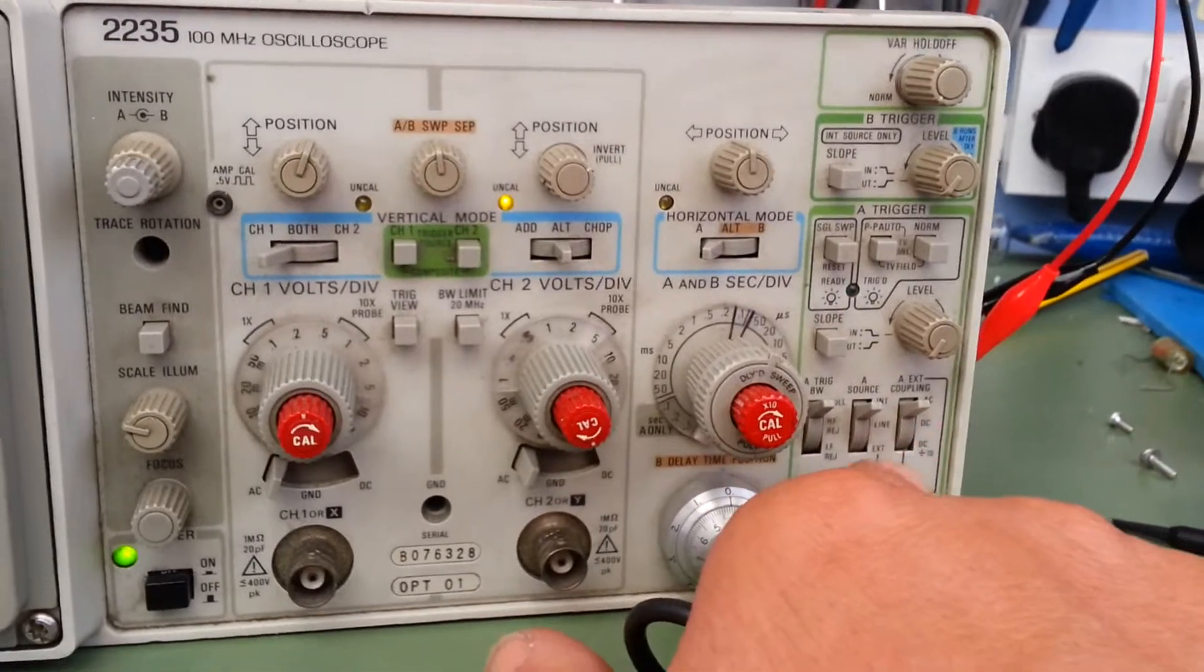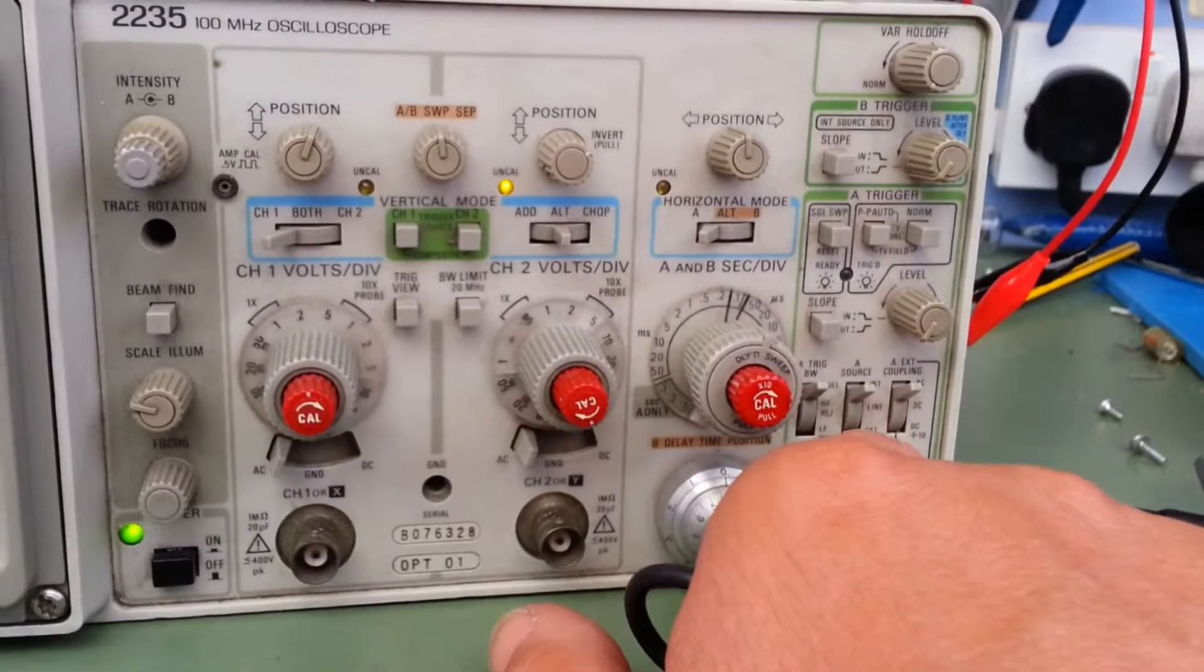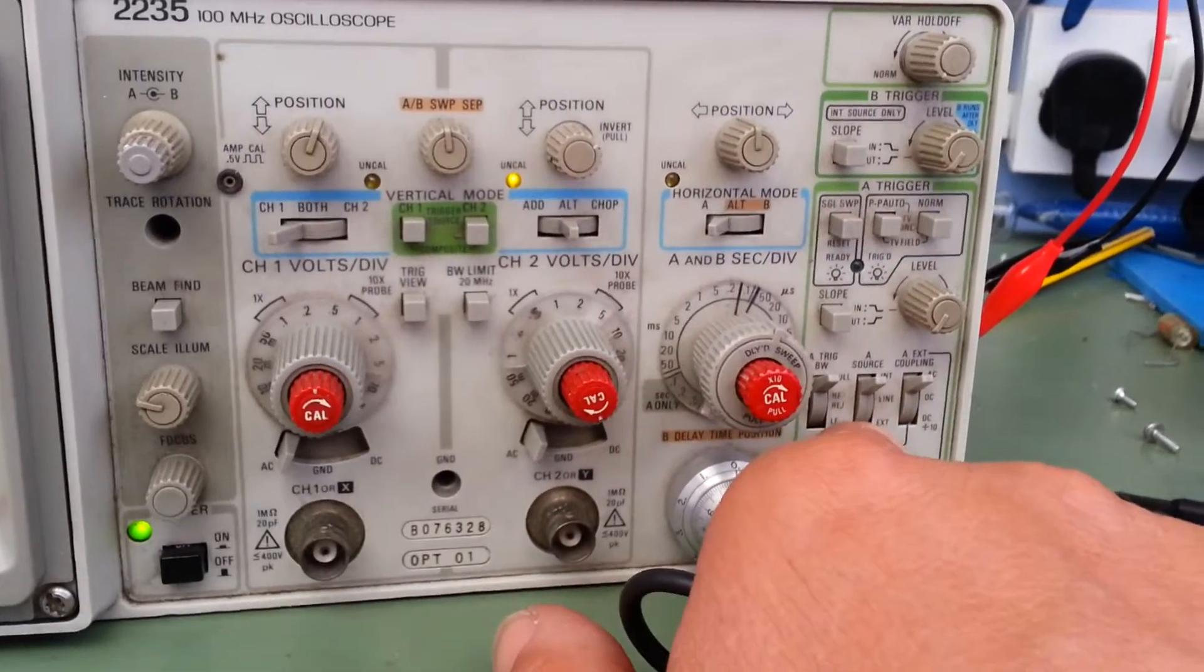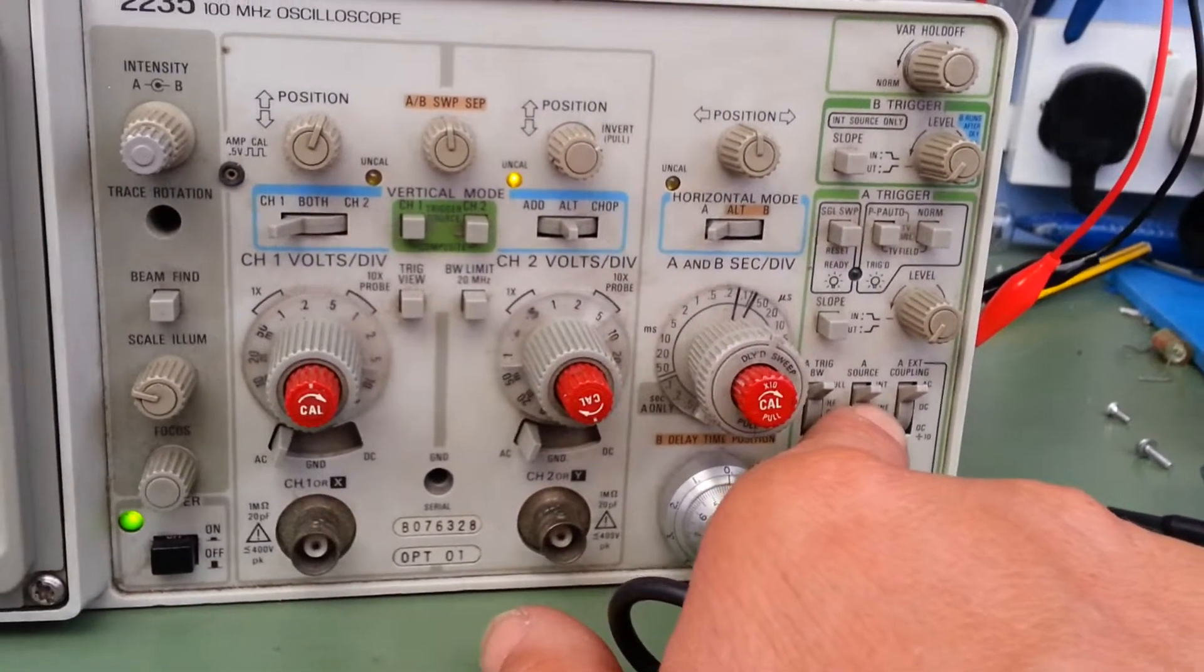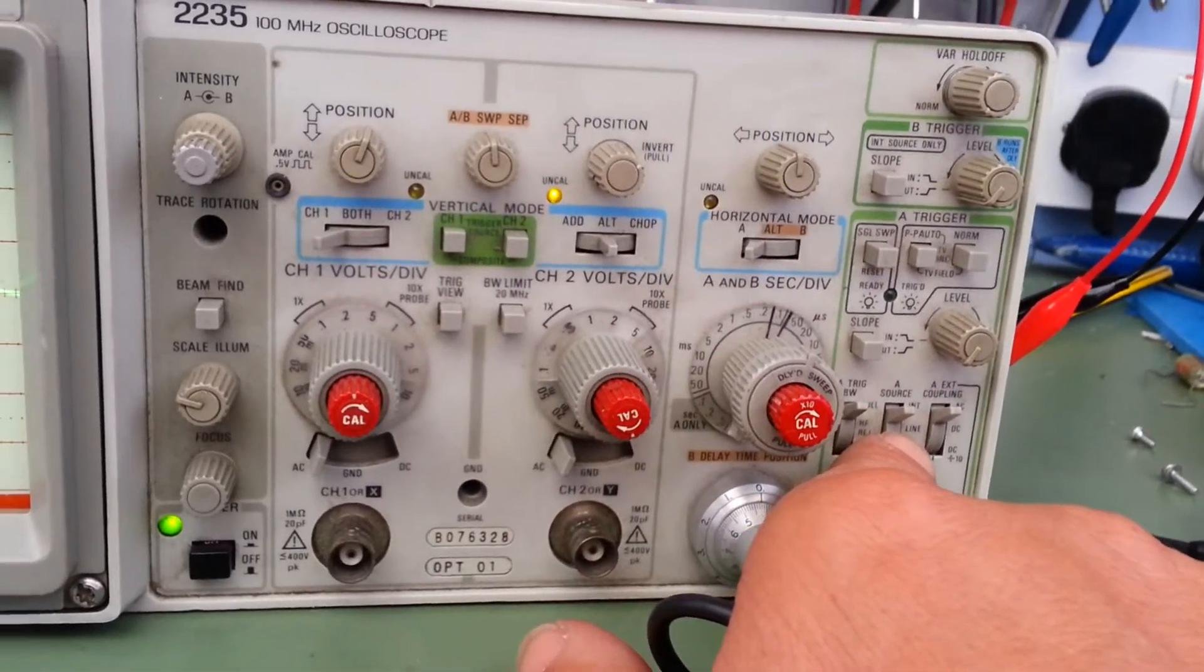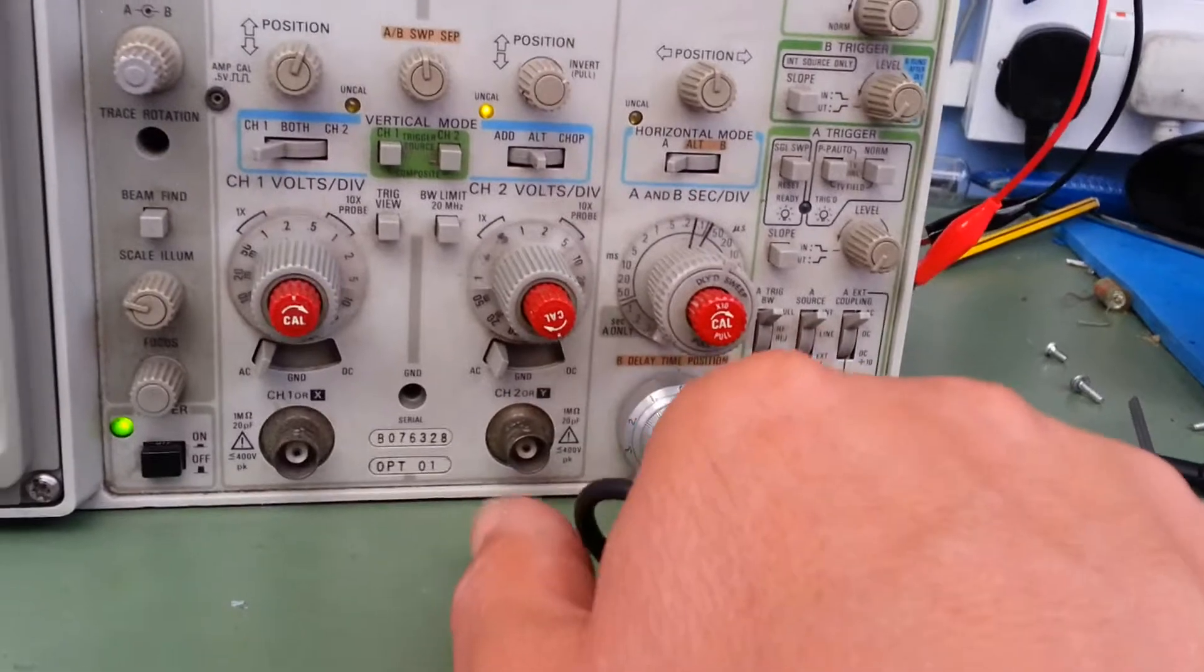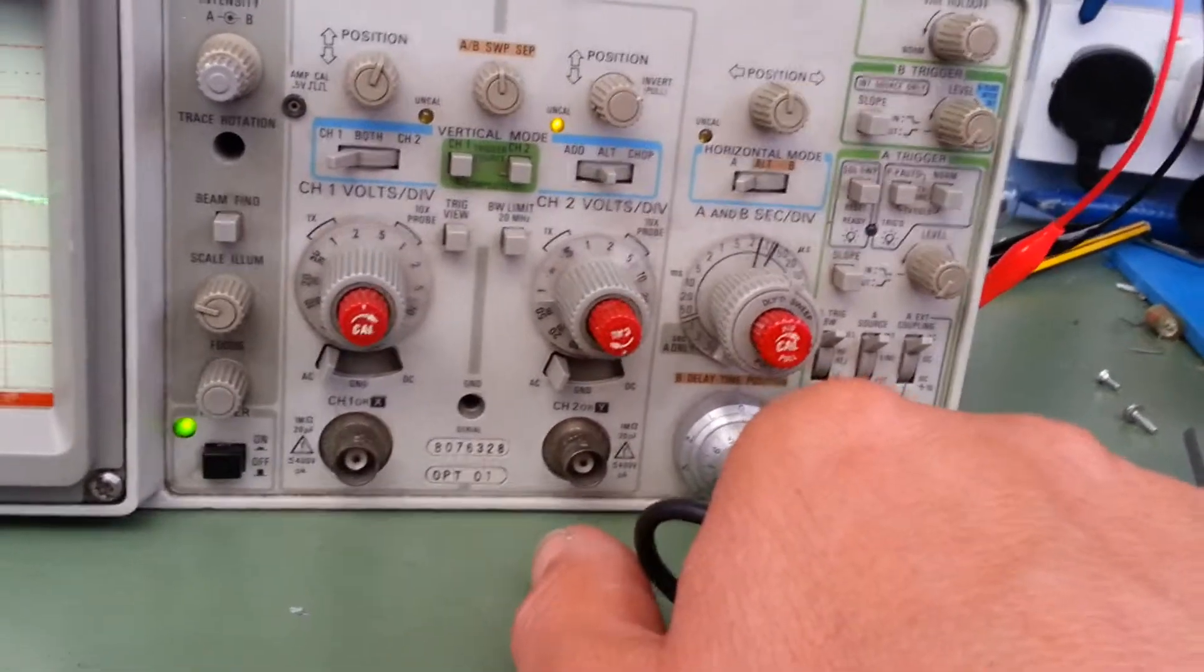AC coupling, DC coupling, and DC divided by 10 now. I don't know if that's just a higher voltage input. It looks like it possibly is. Normal thing for source. Internal source. Line which triggers off the line frequency of the mains. So the scope will always trigger to 50 Hz in the UK. External trigger. That's your external trigger there. And you can run that off a signal generator or a frequency reference if you wish to.